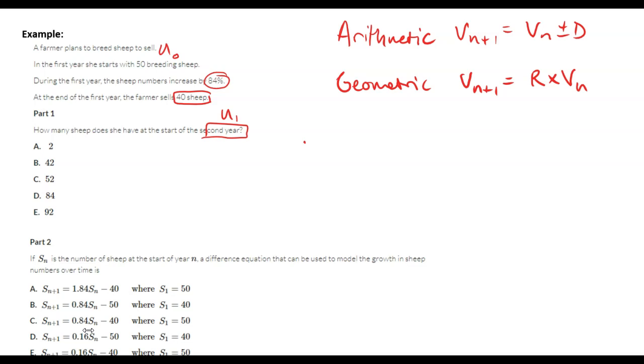The recurrence relation for this would be un plus 1 equals 1.84 to increase by 84 percent, times un, minus 40.